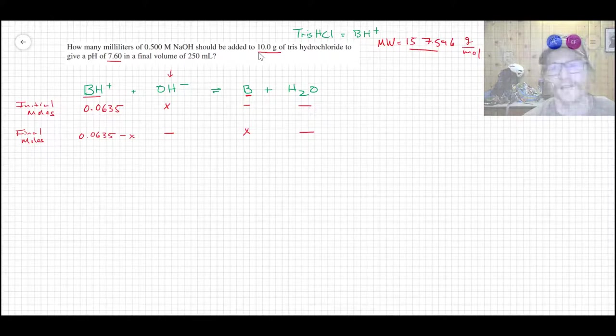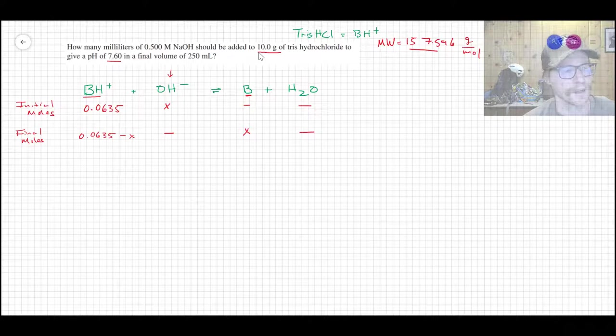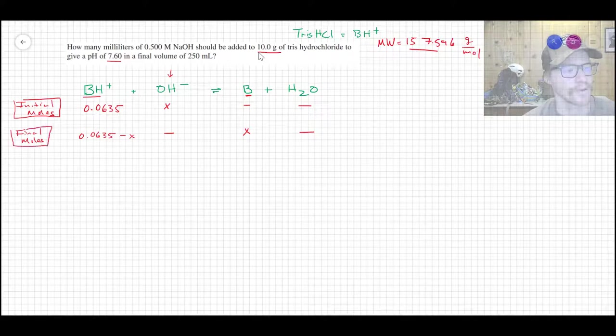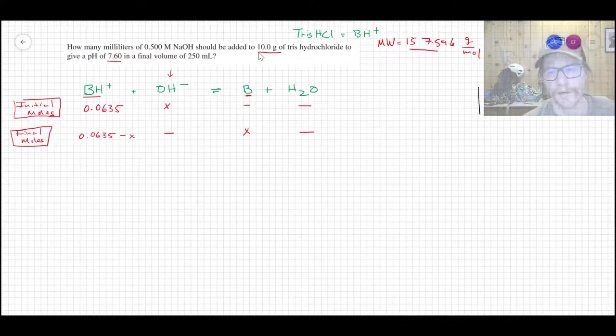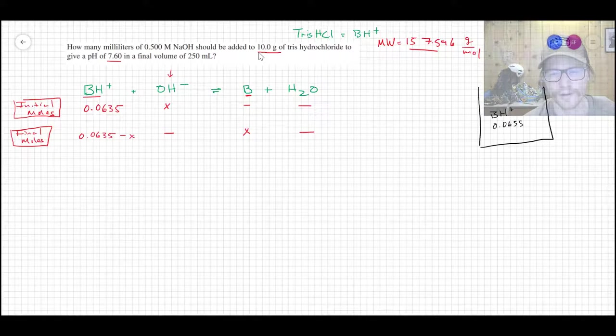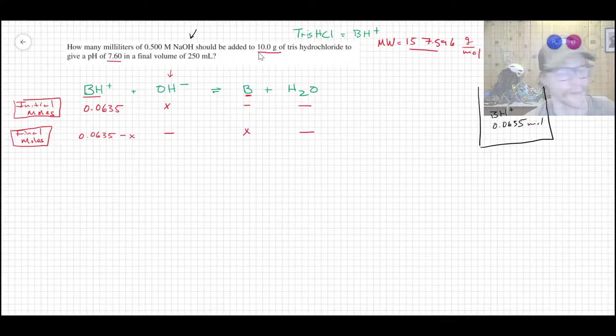And we want to add just enough of the hydroxide such that the ratio between BH+ and B gives us a pH of 7.6. So of course we're going to need the Henderson-Hasselbalch equation. So first thing I did was just take the 10 grams of the Tris-HCl using the molecular weight which is 157.596 grams per mole and then I converted that to moles.